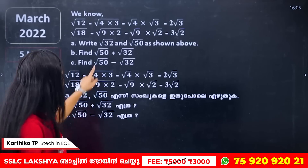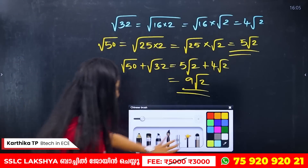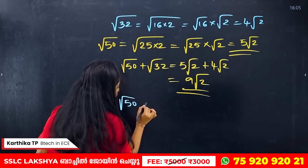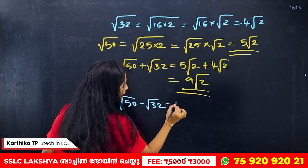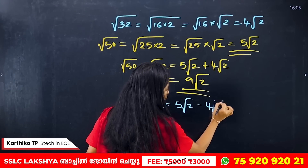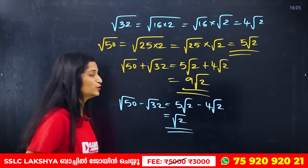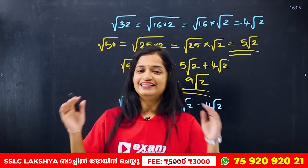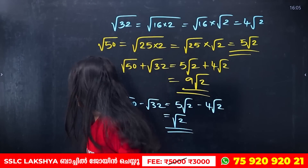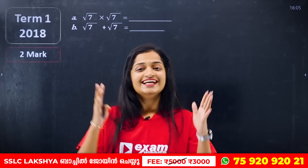Now, root 50 minus root 32. If you have any questions, you can ask. Please comment in our comment box.